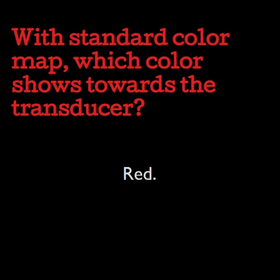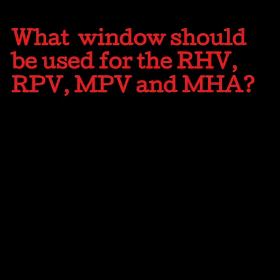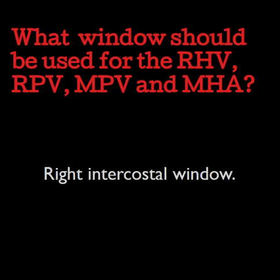You do not want to invert your color map during a hepatic Doppler examination. What window should be used for the right hepatic vein, right portal vein, main portal vein, and main hepatic artery? The right intercostal window. Remember you have the left intercostal window, an anterior abdominal window, and a right intercostal window. You want to choose the best window that gives you a 0 to 60 degree angle on the vessel you're sampling.